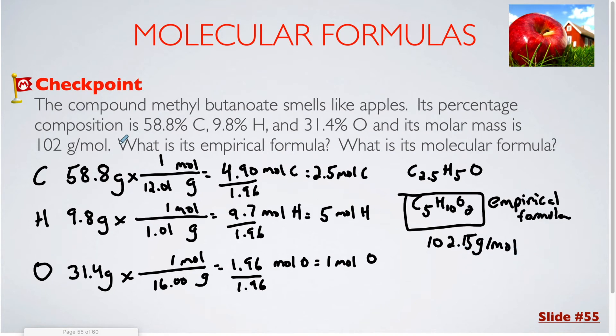Which is essentially identical to the 102 grams per mole we have for the molecular formula. So if I were to divide these two numbers, I would get a 1. What that tells me is that the empirical formula is exactly the same as the molecular formula. And in some examples that can actually be true. So C5, H10, O2 would also be the identity of the molecular formula.